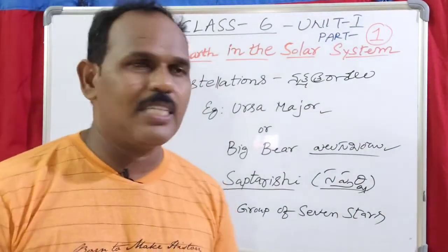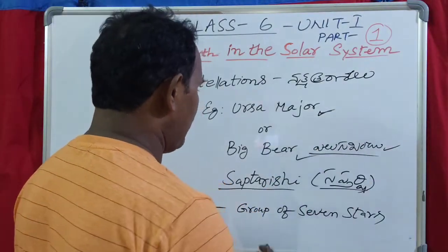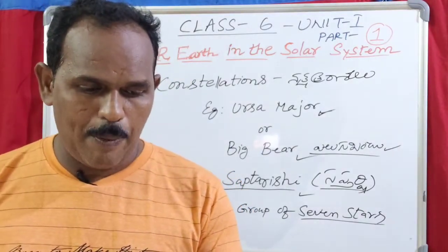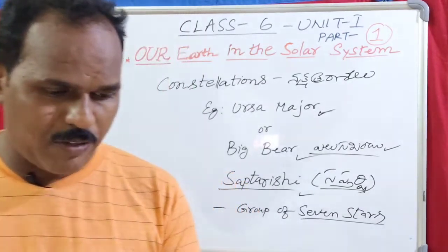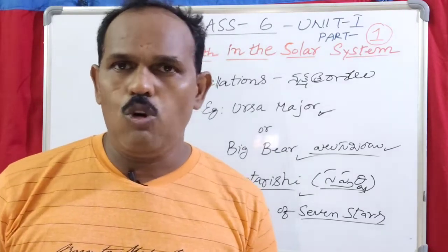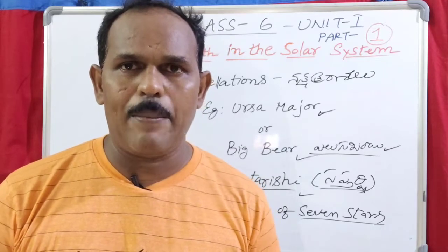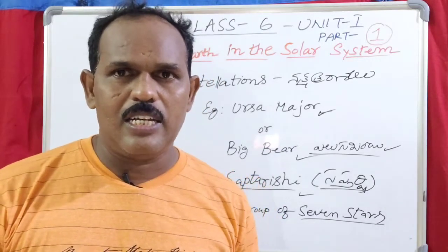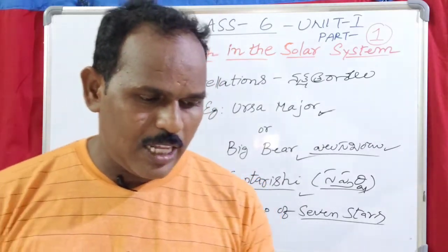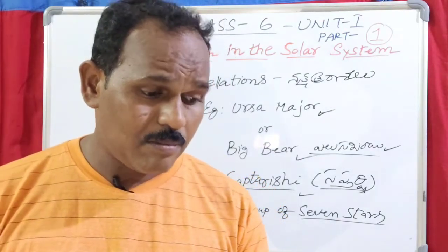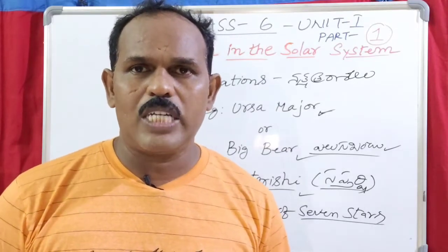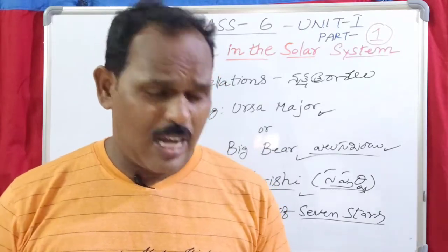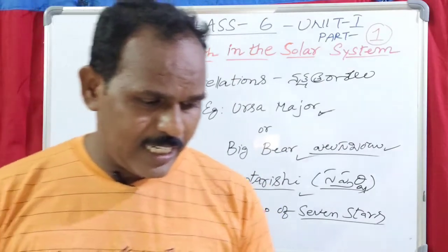Do you know? In ancient times, people used to determine directions during the night with the help of stars. In the northern hemisphere, people determine the north direction with the help of the north star, also called the Pole Star. If you look at the Pole Star, it indicates the north direction.